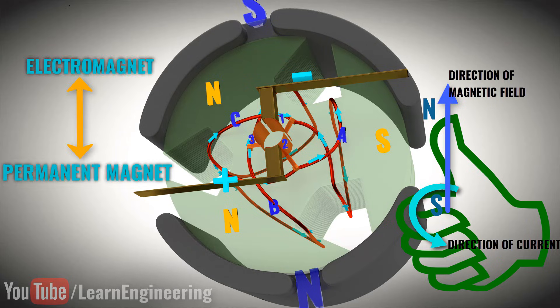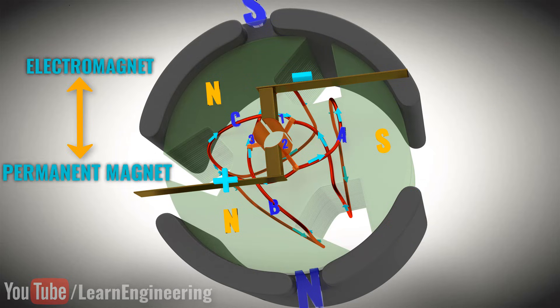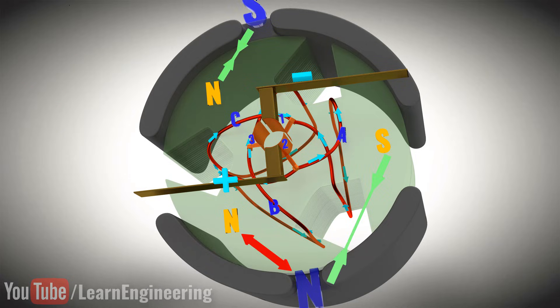These electromagnets will interact with the permanent magnet now. The north and south poles will attract, while the north and north poles will repel, as shown. This will force the rotor to turn as illustrated.